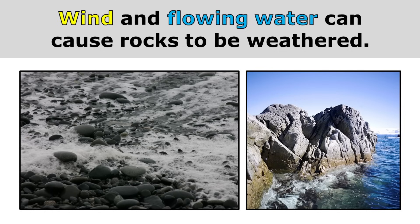Wind and flowing water can cause rocks to be weathered. On the left, you see how all those rocks are smooth. That's because water has weathered those rocks — it has broken off all the little bits around them until eventually the water has made them smooth. And on the right, you can see how those rocks are broken and cracked, caused by the weathering of the rocks from wind and water.